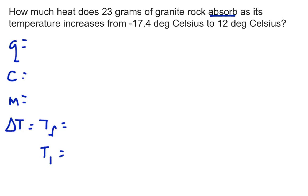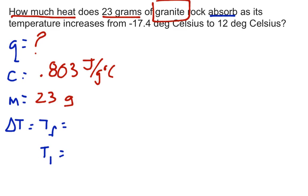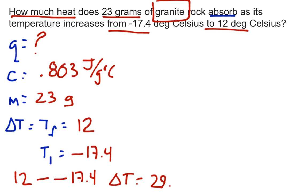What are we looking for? The question 'how much heat' tells us we're looking for Q. 23 grams is mass. Granite tells us what to look up for specific heat. When we look that up, granite has a specific heat capacity of 0.803 joules per gram degree Celsius. The toughest part is figuring out final and initial temperature. We're going from 17.4 to 12, so 12 is final temperature, negative 17.4 is initial. 12 minus negative 17.4 gives us delta T equaling 29.4 degrees Celsius.